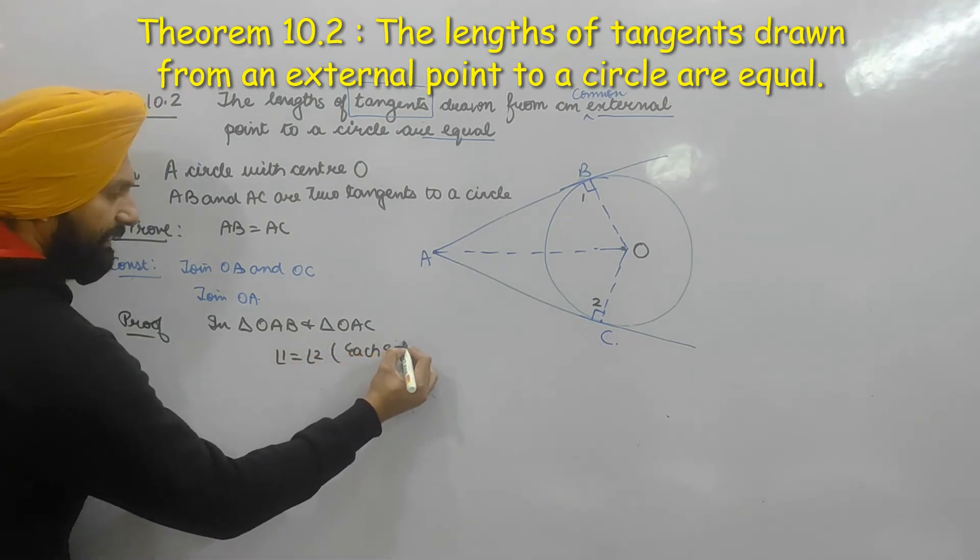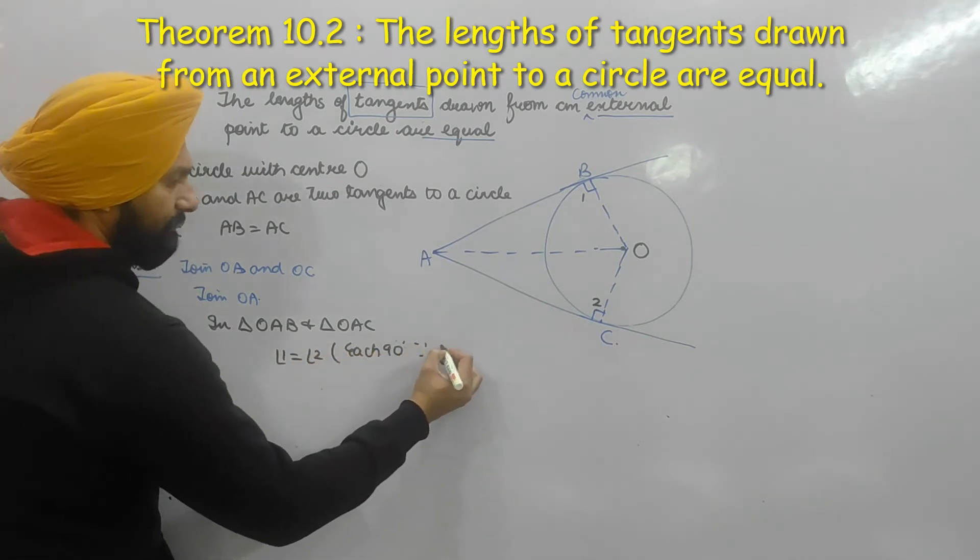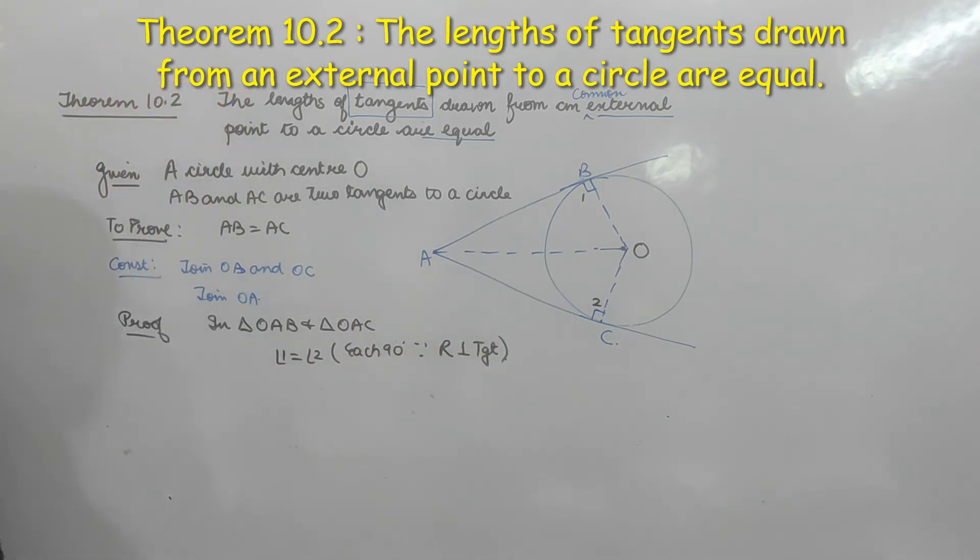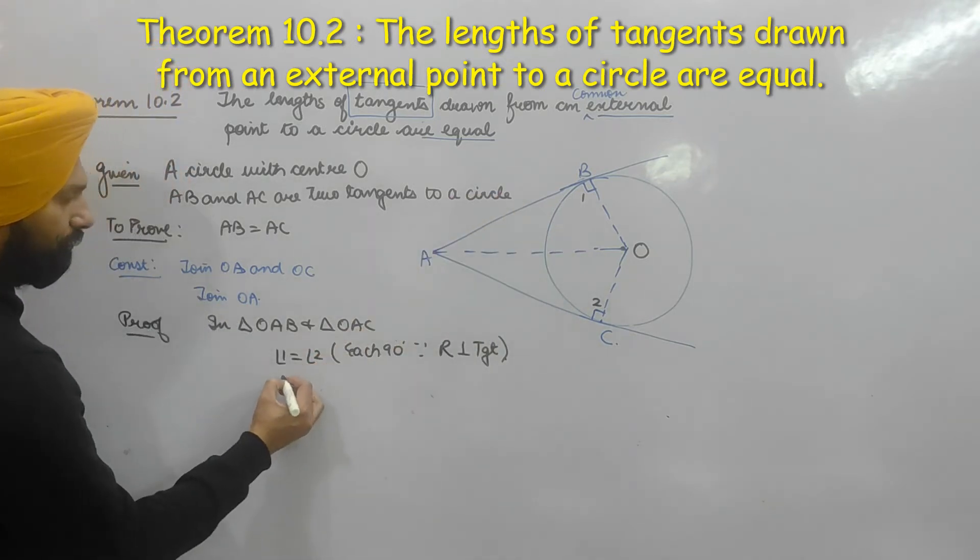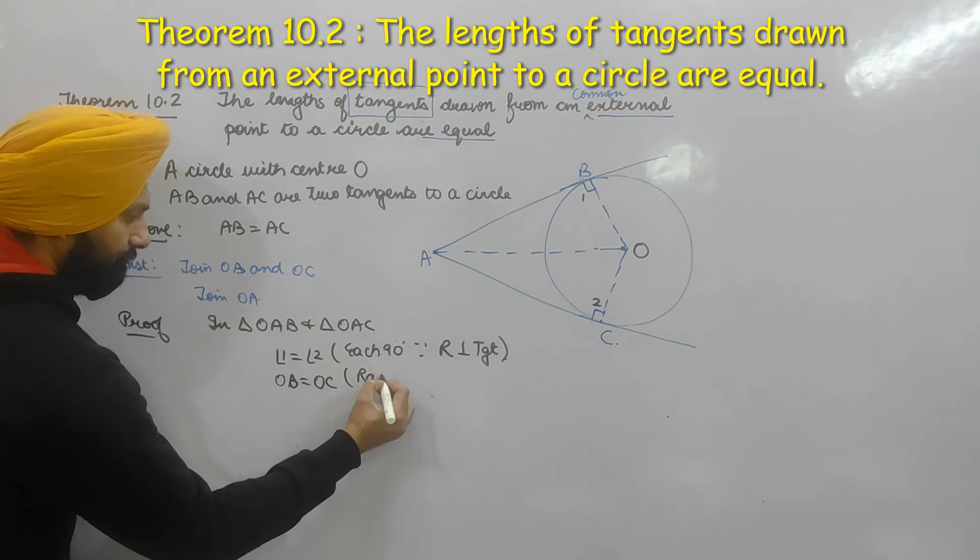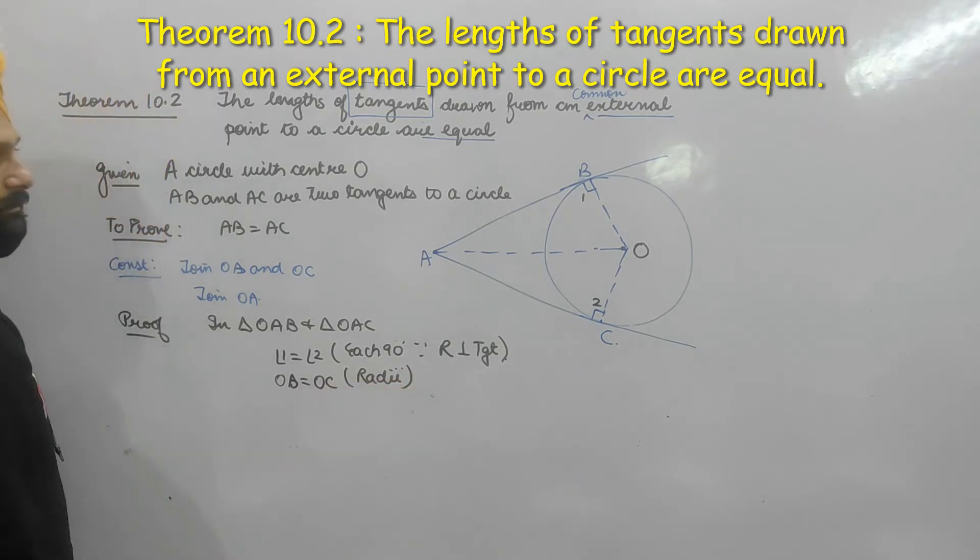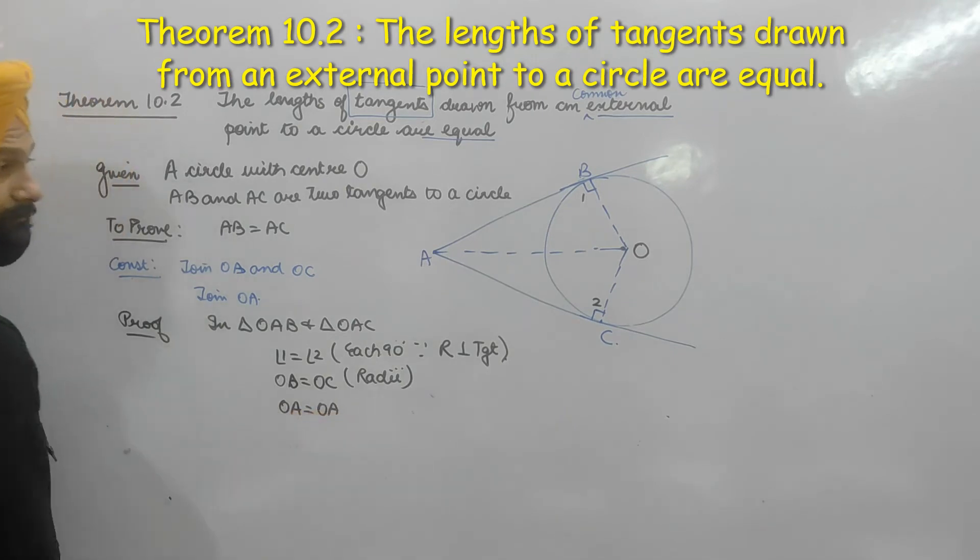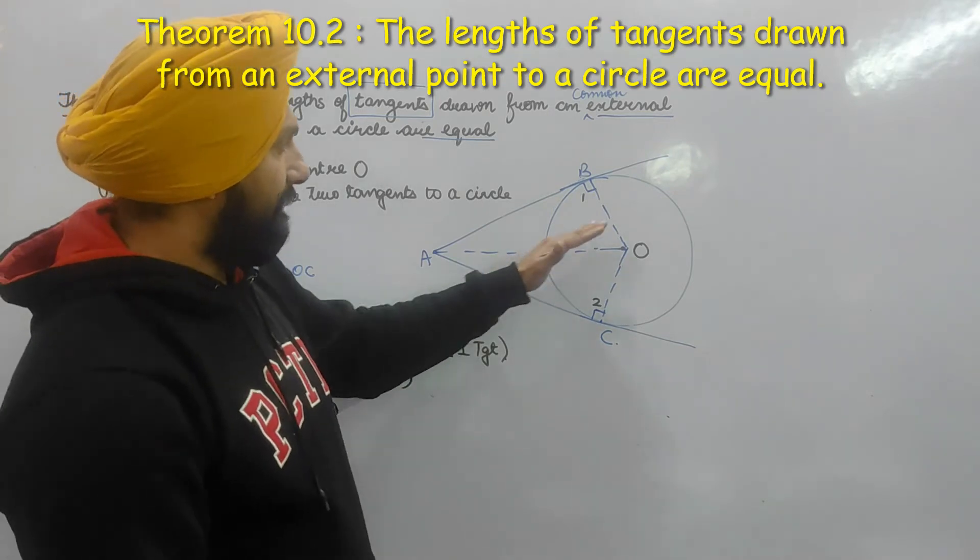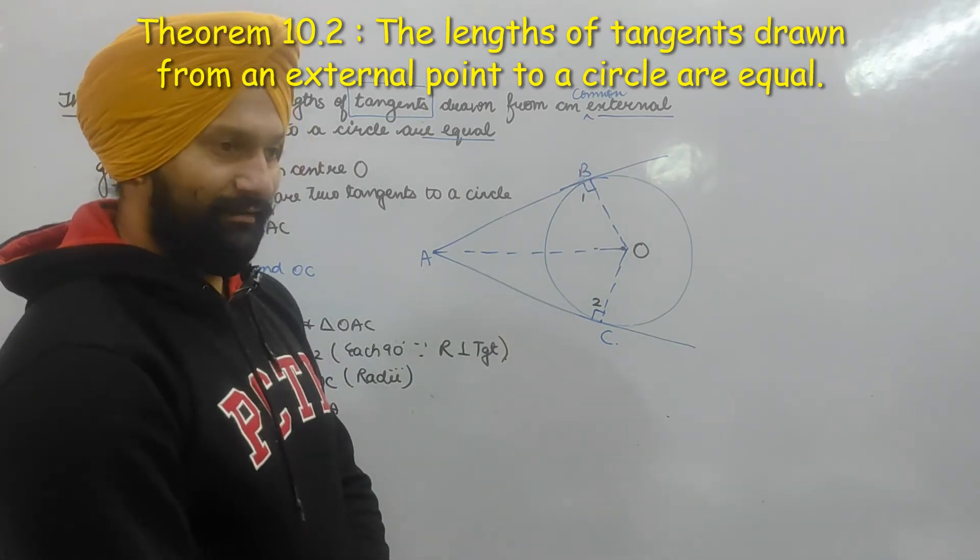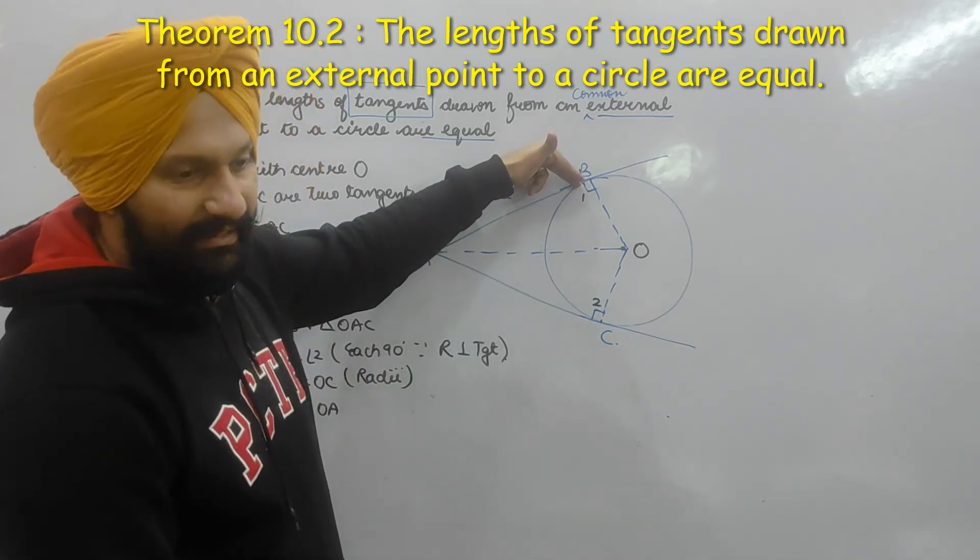Each is 90 degrees because radius is perpendicular to tangent. Next, OB is equal to OC, radius. And OA is equal to OA. So what is the result? SSA RHS, angle is 90 degrees.